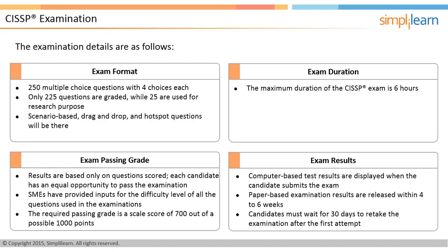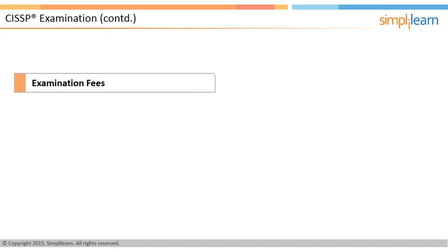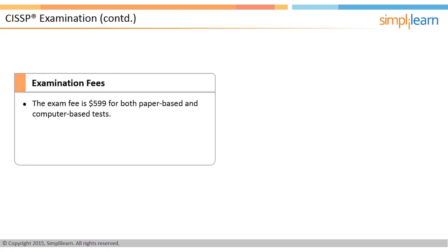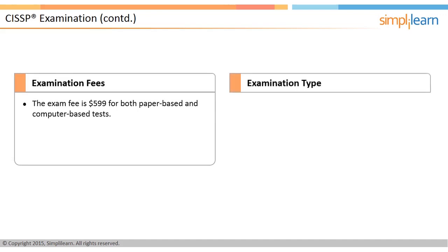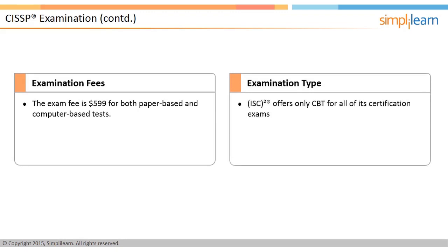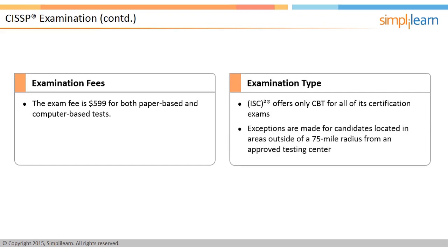The exam fee is US $599 for both paper-based and computer-based tests. From September 1, 2012, ISC² offers only computer-based testing, or CBT, for all its certification exams. For candidates located more than 75 miles from an approved testing center, a case-by-case paper-based exam is offered.